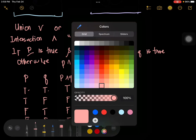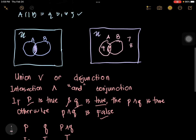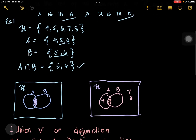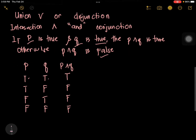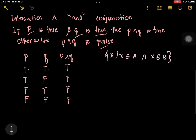Let's have our example. We have the elements 4, 5, 6, 7, and 8. Our proposition P is 'X is an element of A' and our Q is 'X is an element of B,' combined by a conjunction — AND. So P is 'X is an element of A' and Q is 'X is an element of B,' meaning X must be an element of A AND an element of B.